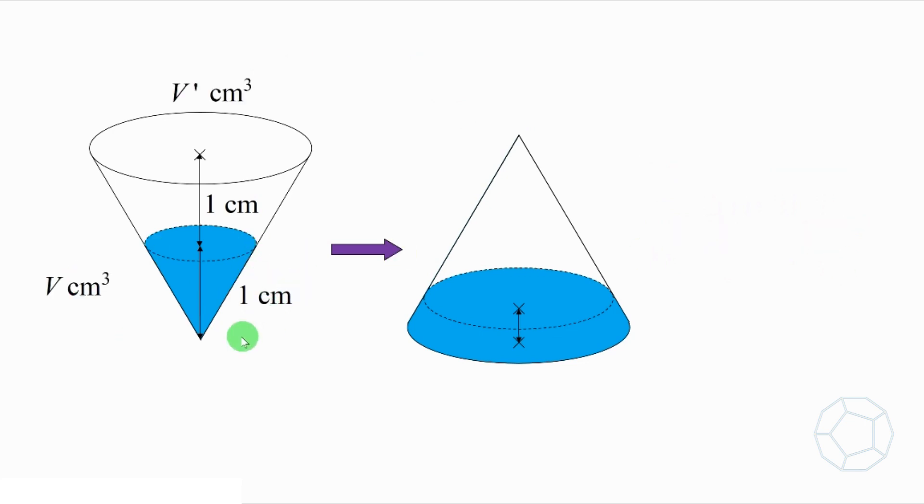Now, we let the volume of water be V cm³ and the volume of the cone be V' cm³. We can easily get a relation between them, which is V' over V is equal to 2 over 1 whole cube. And this is equal to 8.